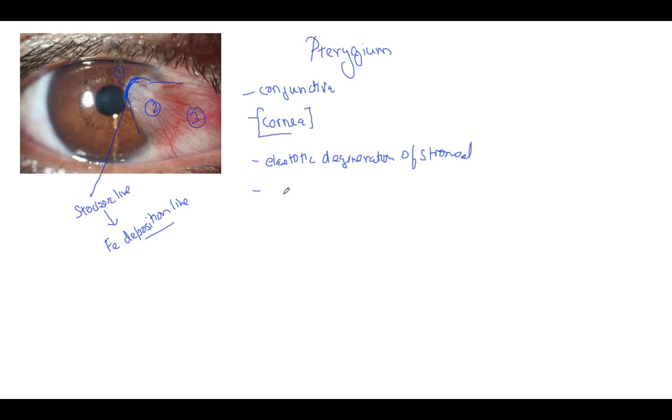The important point is that it is a vascularized tissue. Can you see that here there are blood vessels encroaching in it? The important thing is that it can cause diminution of vision. The main factor is astigmatism. Because of this conjunctiva that is attached to cornea, it causes steepening of the corneal curvature, causing astigmatism that can cause diminution of vision.